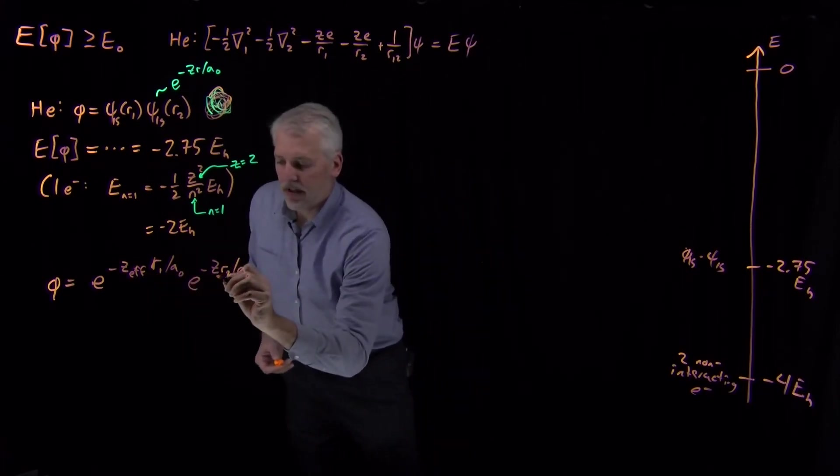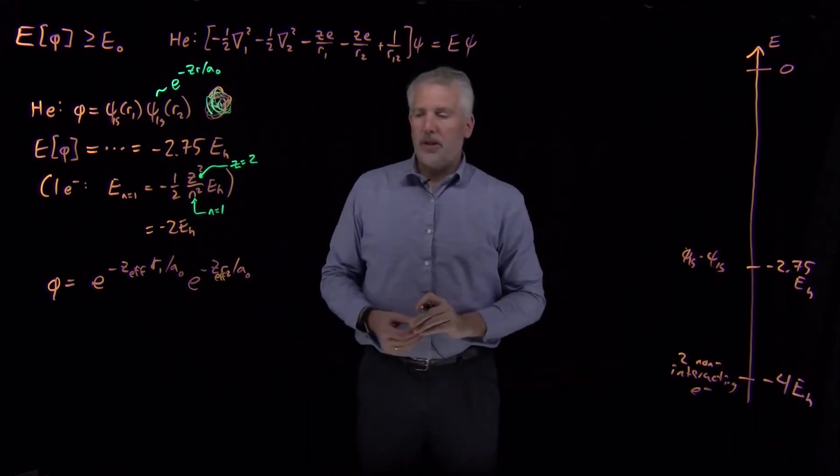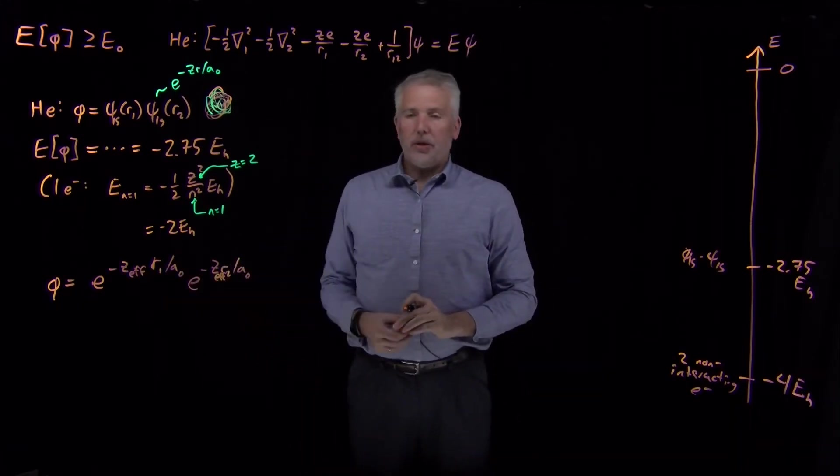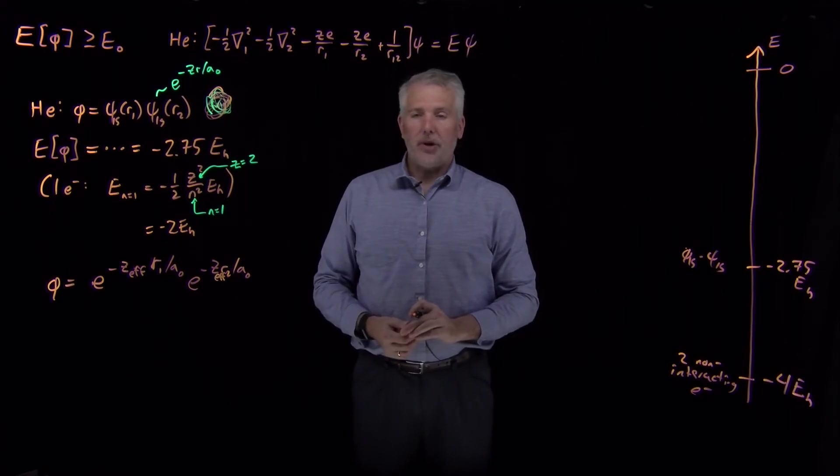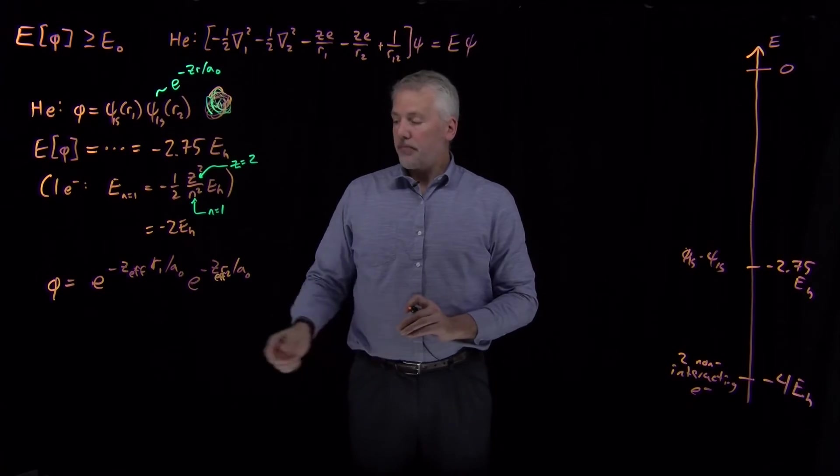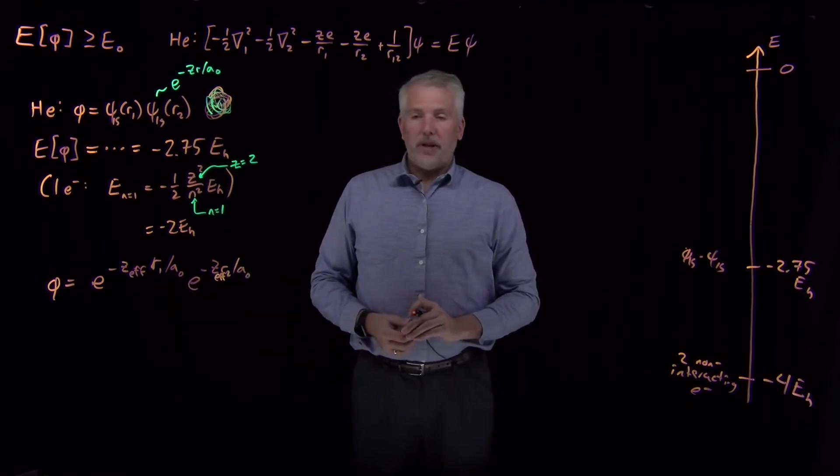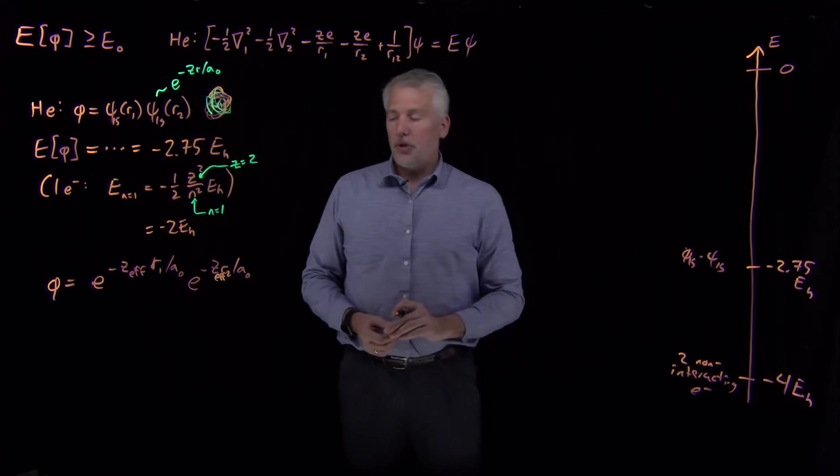The negatively charged electron might screen the other electron from experiencing the full Coulomb attraction of the nucleus. So instead of using z equals 2 for the nuclear charge, and I should write z effective in this term as well, instead of requiring that z equals 2, I'm going to let z be my variational parameter. I'm going to allow the value of z to change like lambda did when we considered the harmonic oscillator. So if I allow the value of the nuclear charge to be my variational parameter...